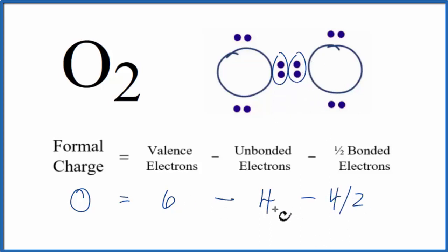So six minus four, that's two, minus two equals zero. So the formal charge on this oxygen right here is zero.